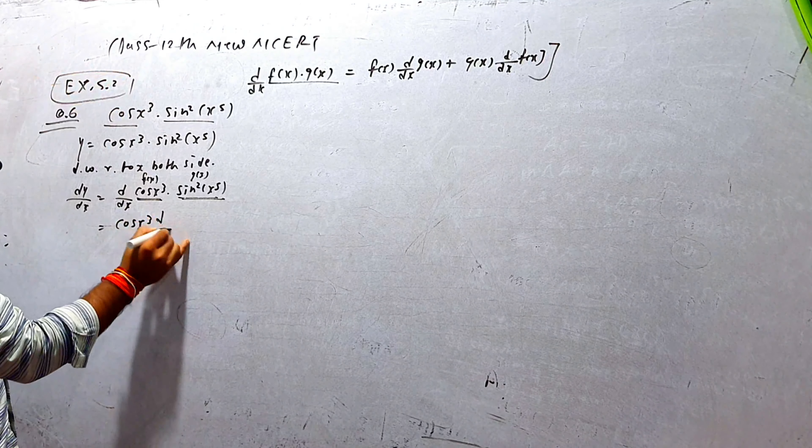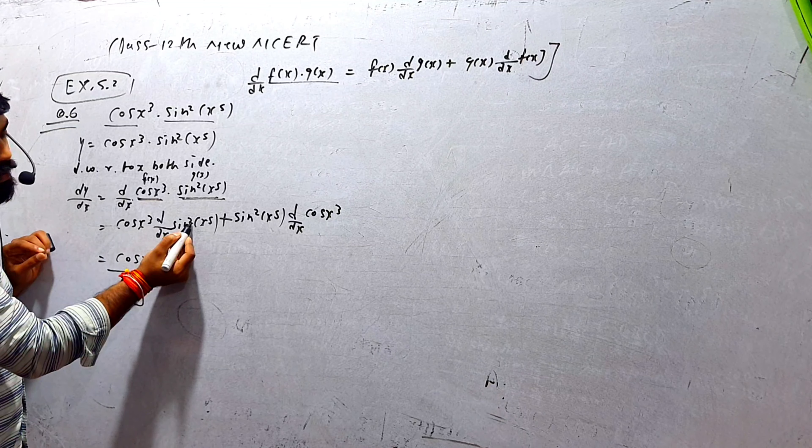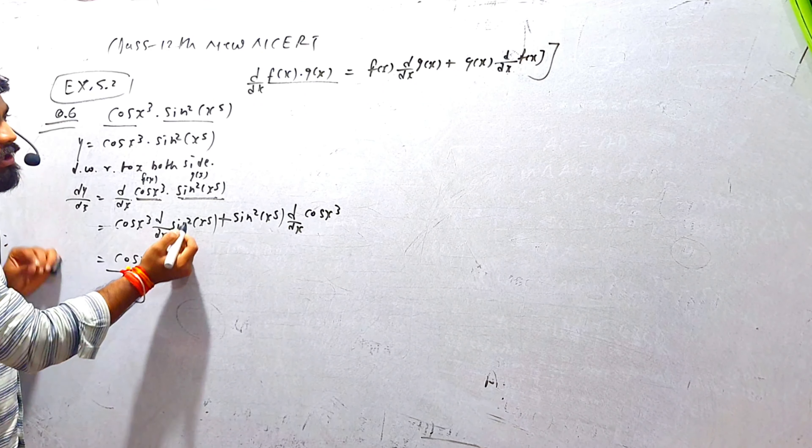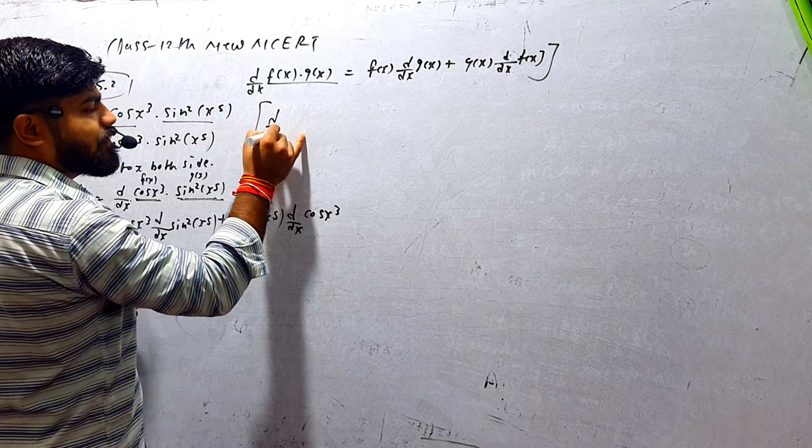Formula के according: f(x) मतलब cos(x³), d/dx of sin²(x⁵) plus g(x) मतलब sin²(x⁵), d/dx of cos(x³)। अब d/dx of sin²(x⁵) में power rule लगेगा — d/dx of xⁿ = n·xⁿ⁻¹। sin की power 2 है, मतलब n=2।